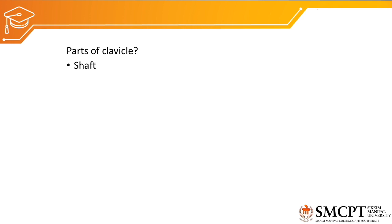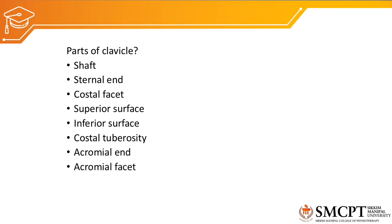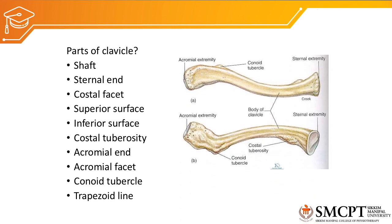The parts of the clavicle are the shaft, sternal end, coastal facet, superior surface, inferior surface, coastal tuberosity, acromial end, acromial facet, conoid tubercle, and trapezoid line. The clavicle has a shaft, a sternal end, and a scapular end. Towards the sternal end it has a coastal facet and a coastal tuberosity. The inferior surface contains two tubercles: the conoid tubercle and the trapezoid line.